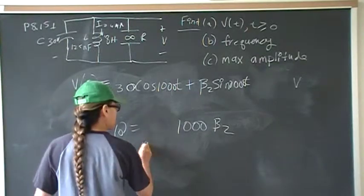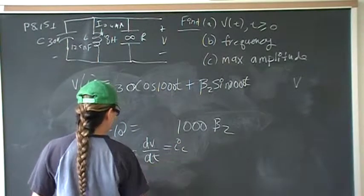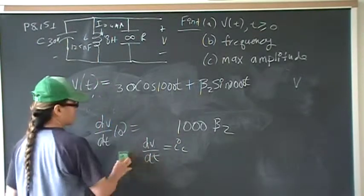And for that we're going to use the equation C dV/dt equals IC. So dV/dt will be IC over C.